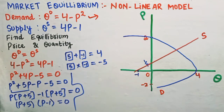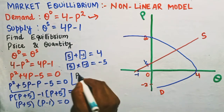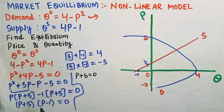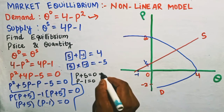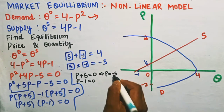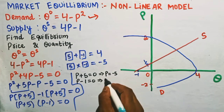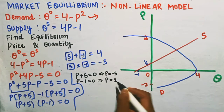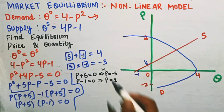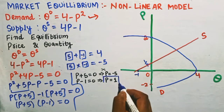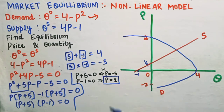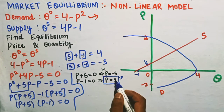This gives either P + 5 = 0, so P = -5, or P - 1 = 0, so P = +1. We reject the negative value since price cannot be negative. Therefore, the equilibrium price is P = 1.